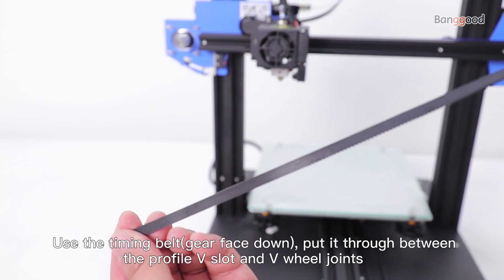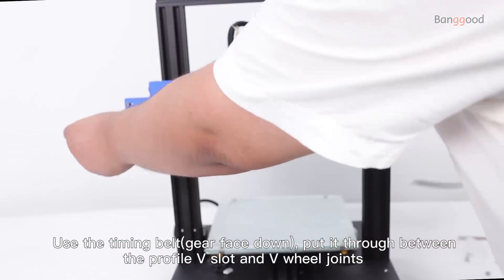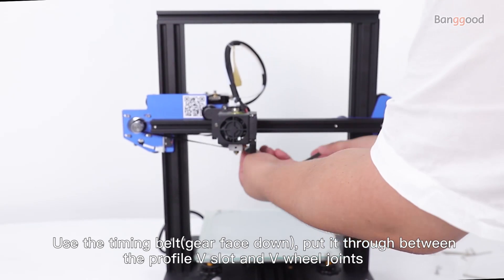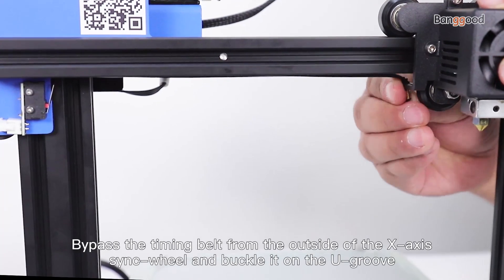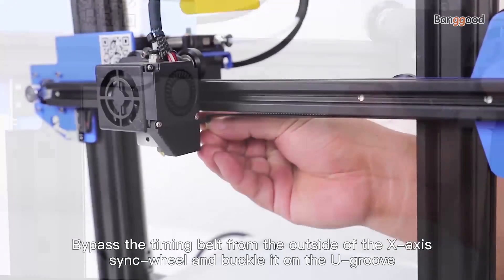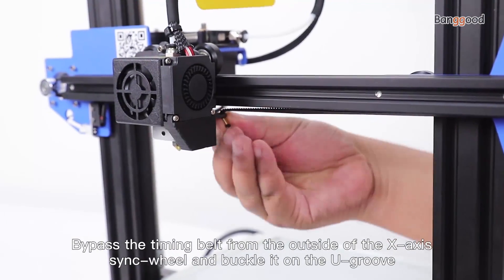Install the X-axis timing belt. Put it through between the profile V-slot and V-wheel joints. Bypass the timing belt from the outside of the X-axis idler wheel and buckle it on the U-groove.